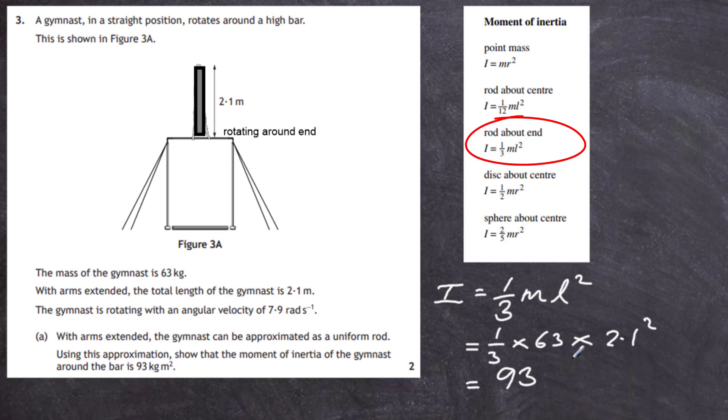And what's going to be units of inertia? Well we know 63 is going to be kilograms, and we know that 2.1 is a length meter squared. And there is the correct units for moment of inertia, 93 kilogram meter squared.